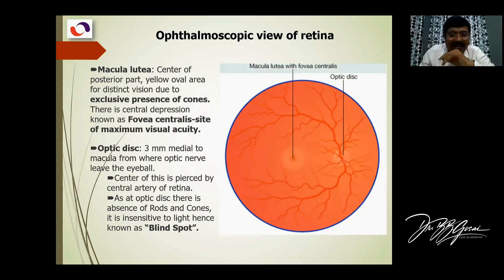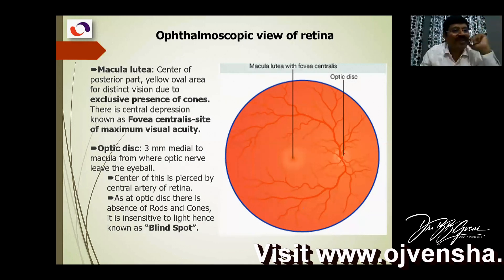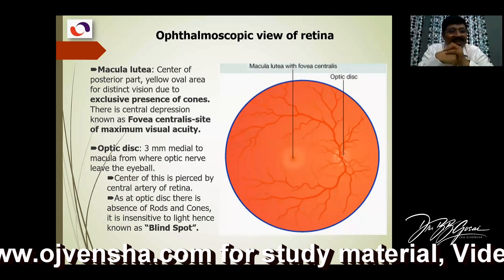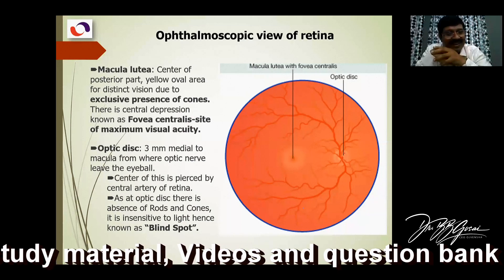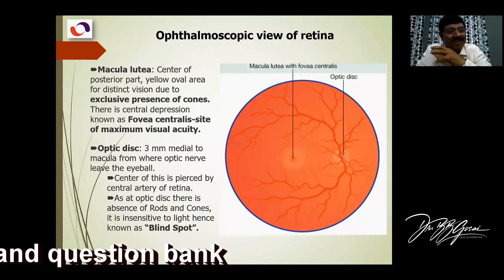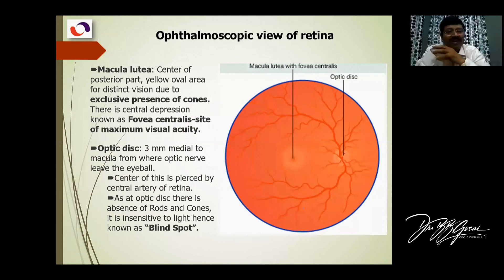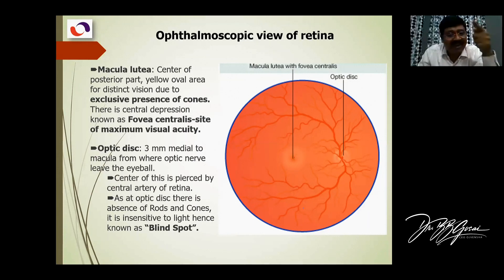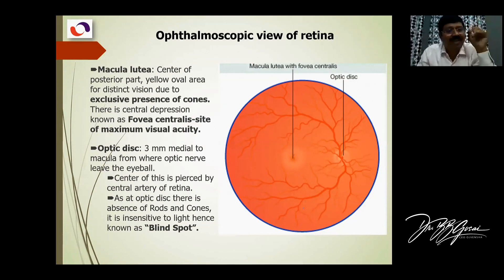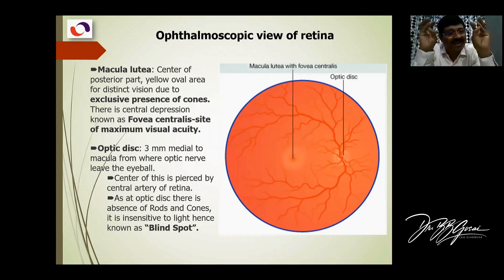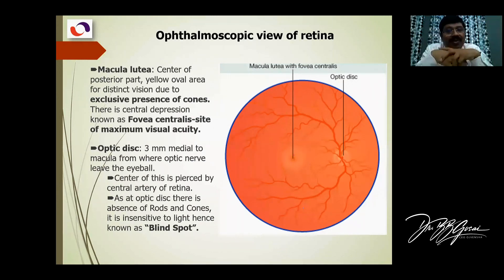The optic disc does not contain rods and cones — no photoreceptors — because only axons are passing through it. So when light falls on this particular disc, you cannot see that particular object. That is known as the blind spot. The macula lutea — meaning yellow — is exactly at the posterior pole, in the axis of vision. This is the point of maximum visual acuity. In the center of the macula there is a fovea centralis, which has the maximum number of rods and cones.